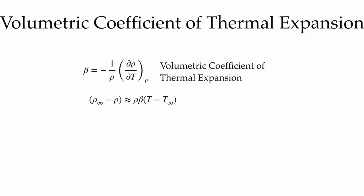The difference in these two expressions — rho infinity minus rho versus T minus T infinity — is arising because of the negative that appears here. For most fluids, if we increase the temperature, we're going to decrease the density, and that's why we see this inverse behavior. An increase in temperature results in a decrease in the density. So this is a way of writing our delta rho as rho beta times T minus T infinity, where rho is the density of our background fluid assumed to be constant, and these are the changes due to temperature differences in the flow.